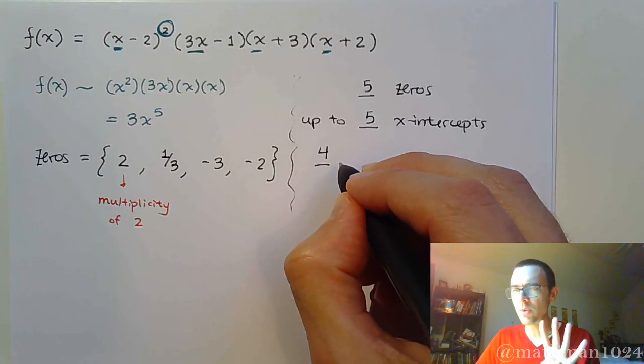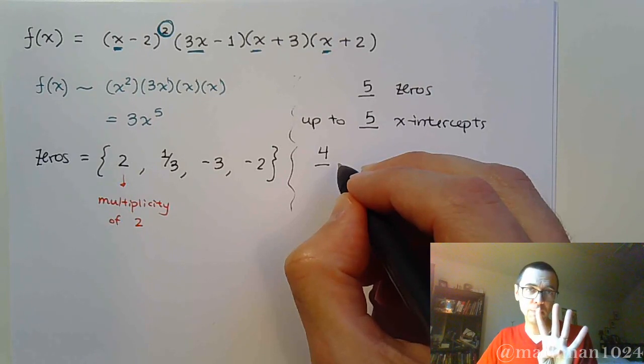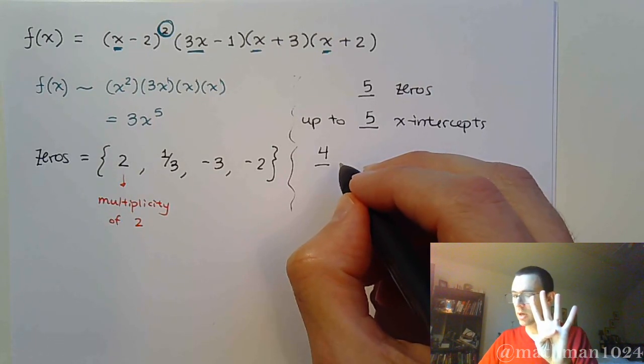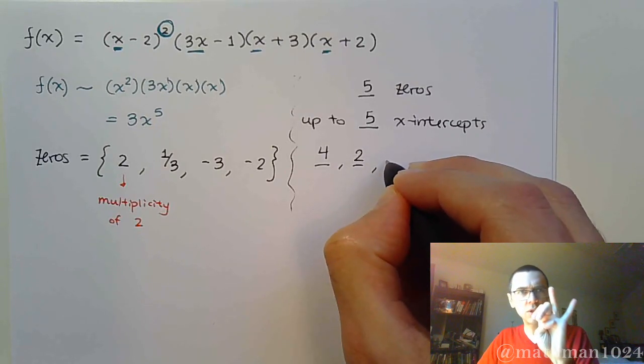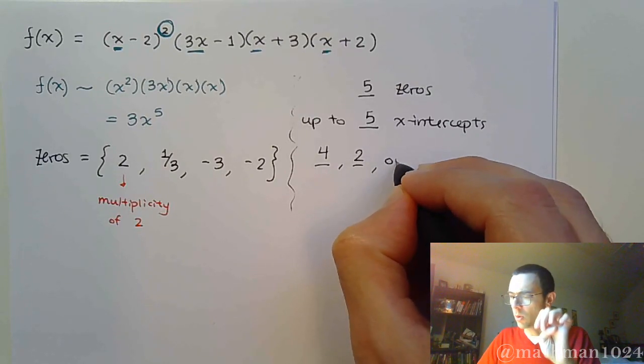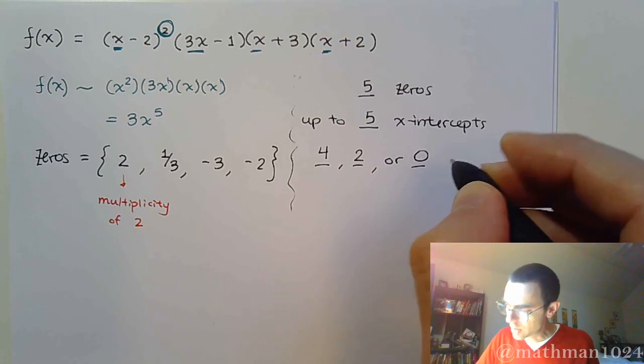So you can have 4, but remember we said we could have, or less than that by a multiple of 2. So 4, take 2 off, so you could have 2. You can still take 2 off, or you have 0 turning points.